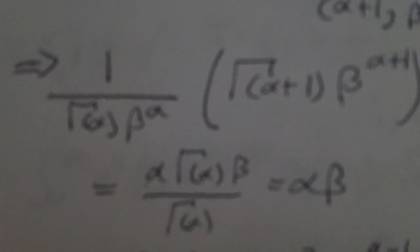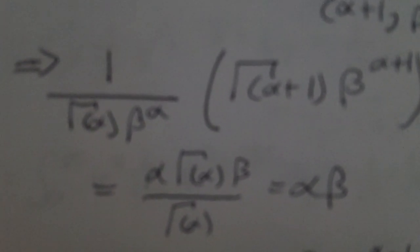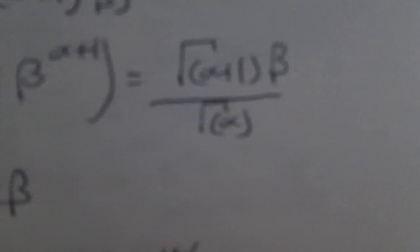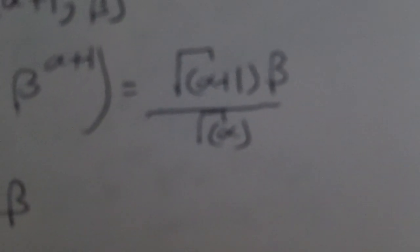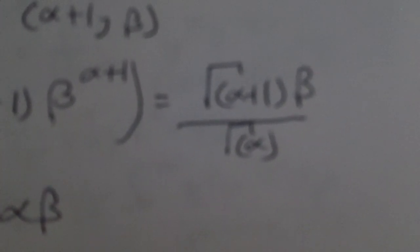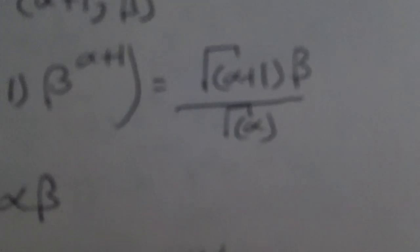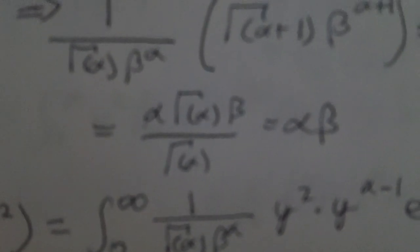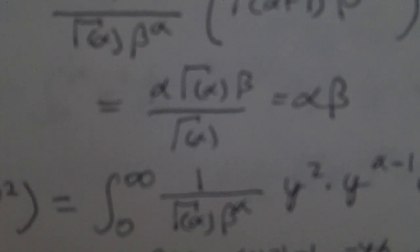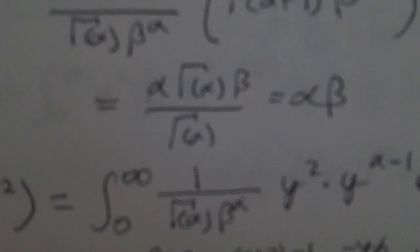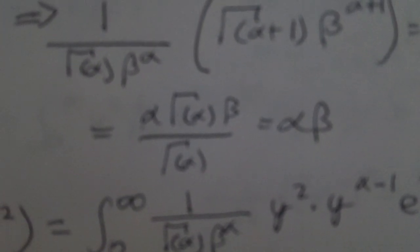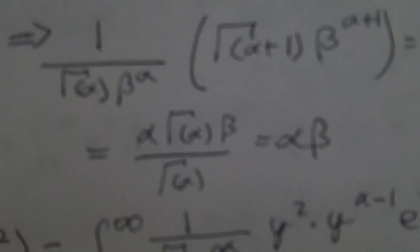If you integrate that kernel, you get the reciprocal of the constant evaluated at those values — so we have Gamma(alpha+1) instead of Gamma(alpha), and beta^(alpha+1) instead of beta^alpha. Multiplying by the constant pulled outside and doing some basic canceling, we get Gamma(alpha+1) times beta divided by Gamma(alpha). Using the recurrence relation (Rule 2), Gamma(alpha+1) = alpha · Gamma(alpha), so the Gamma(alpha) terms cancel and we're left with alpha times beta as the mean.